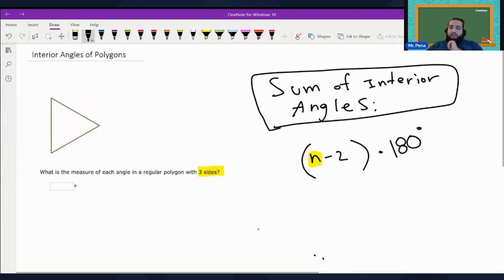Here it says it's three sides. So that's three minus two, which is one times 180 degrees. So the sum of the interior angles is 180.